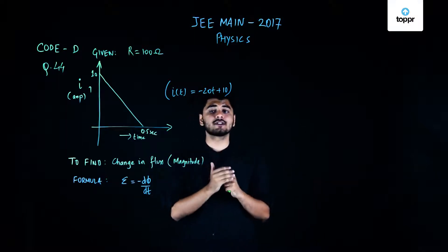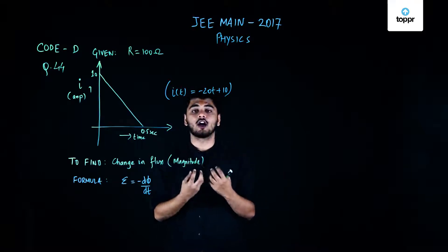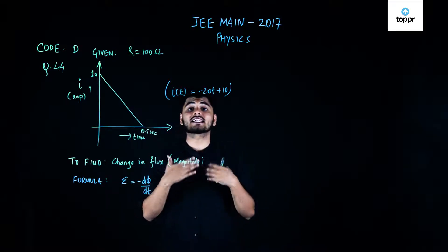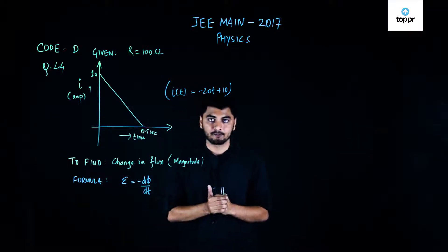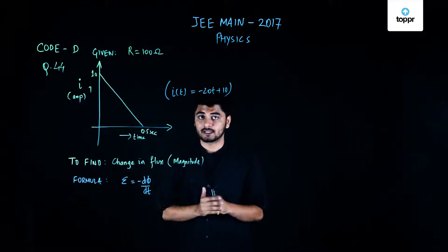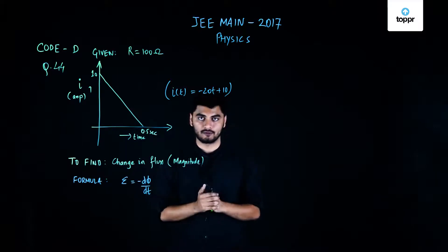The formula we're going to use is that EMF induced in a coil or in a circuit if I change magnetic flux is given by minus dφ by dt. This is what I know for sure. Now I need to find out the change in that flux and I need to find the magnitude of it.